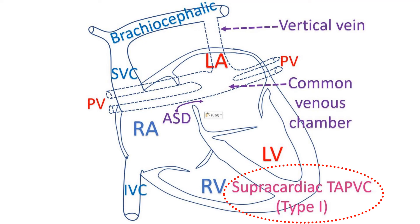There are basically four types of TAPVC. The most common variety is supracardiac, meaning above the heart. In supracardiac TAPVC, the four pulmonary veins from the two lungs join together and drain upwards in a vertical vein. As the name implies, it runs vertically upwards from behind the heart to a blood vessel returning blood from the upper part of the body known as the brachiocephalic vein. This vein then joins the superior vena cava, or SVC, a large vein draining blood from the upper part of the body. The SVC in turn drains to the right atrium, the right upper chamber of the heart.